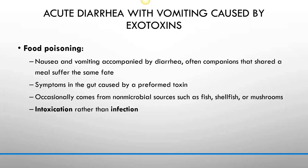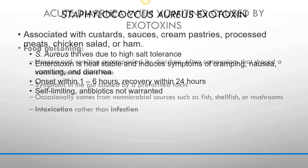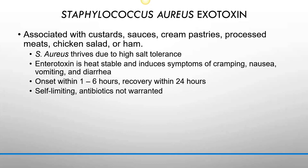With food poisoning, symptoms include nausea, vomiting, and diarrhea. Companions who shared the meal suffer the same fate. Symptoms are caused by a preformed toxin and are self-limiting. Staph aureus exotoxin is associated with custard, sauces, cream, pastries, processed meats, chicken, salad, or ham. Staph aureus thrives at high salt concentrations, releases a heat-stable toxin, and induces cramping, nausea, vomiting, and diarrhea. Onset is within one to six hours and recovery is complete within 24 hours. Antibiotics are not warranted.